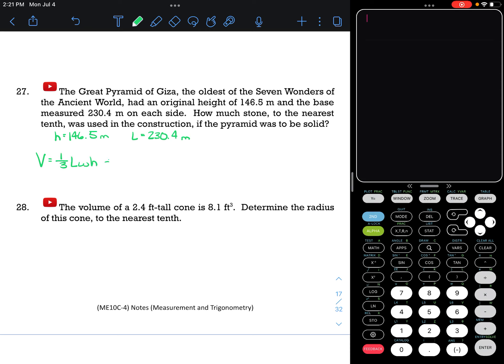The formula to find the volume of a pyramid is one-third length times width times height. My length is 230.4, but the width is actually the same thing. In the question, it says on each side, so we're assuming that the base of this pyramid is a square. So my width is 230.4 as well, and the height is 146.5.